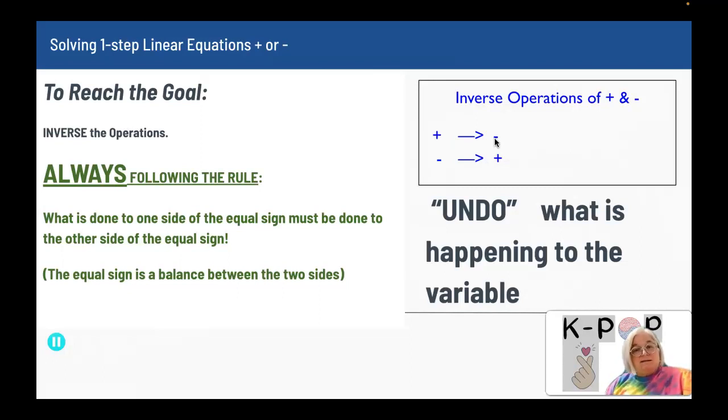So I want to get zero. That's why I inverse the operations - to get zero. If I have a minus or a negative, I add the opposite so that I get zero on that one side.